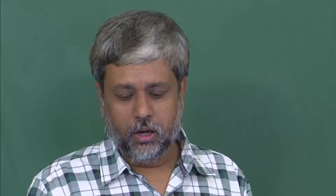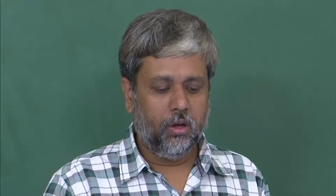If you carry out tensile testing of a ductile metal, you get the engineering stress-strain diagram of the material. The stress-strain diagram shows certain features for a ductile metal. There is an initial region where, if you unload the material, it will come back to the same point — that is known as the elastic limit, meaning the maximum stress that can be withstood without any measurable permanent strain after unloading. Within the elastic limit there are two regions: up to some point it is perfectly linear, and beyond that slightly non-linear, but the material still returns to its original position.